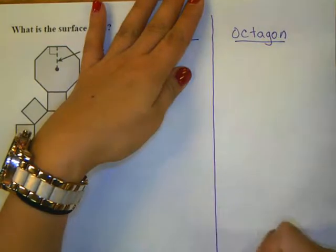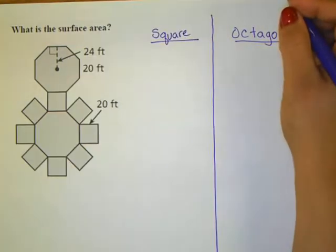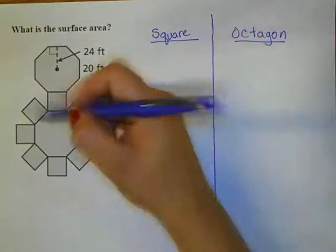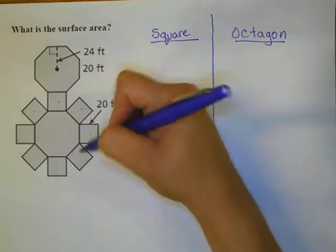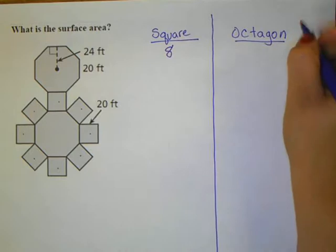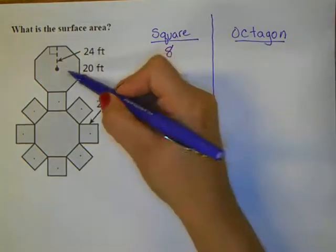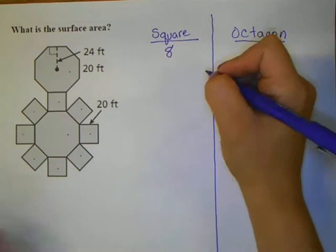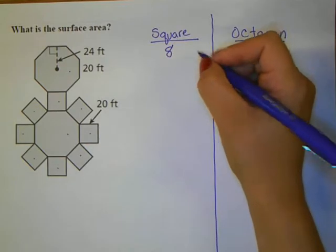I'm even going to draw a line so I have two separate columns. The squares: I have one, two, three, four, five, six, seven, eight. So I'm going to write eight. For the octagon I see that I have two.